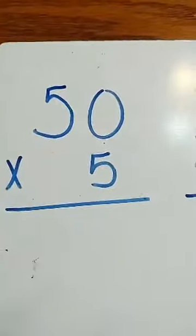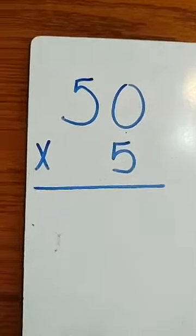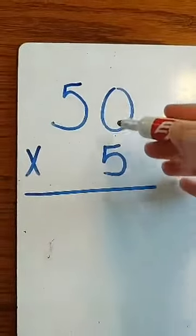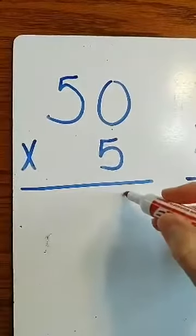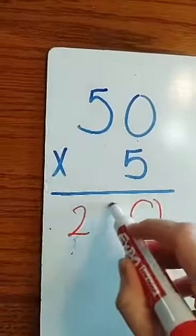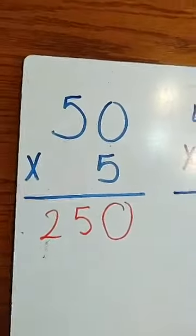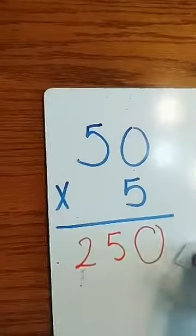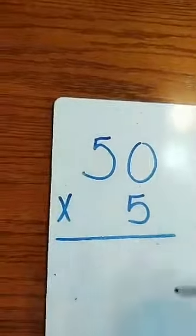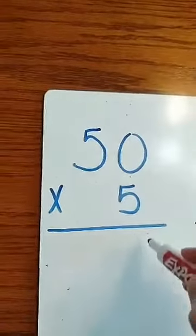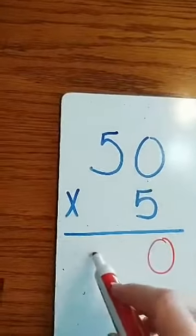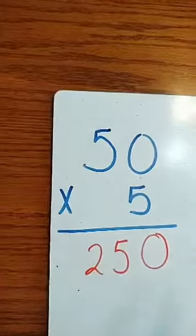Okay, so our first one is 50 times 5. Now there's a couple ways we could do this problem. We could go 5 times 0 is 0, and 5 times 5 is 25. Okay, you're going to get the same answer if you do it that way, or if you just say, well there's a 0, so I bring that 0 down and I multiply these two numbers. 5 times 5 is 25, and put it in the front.